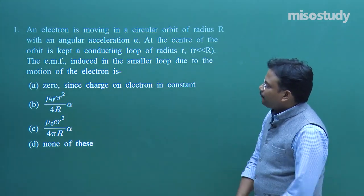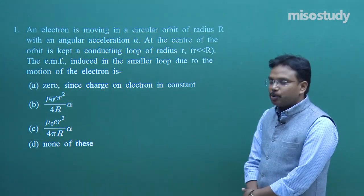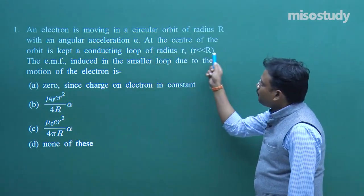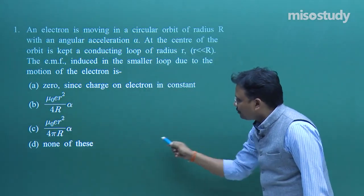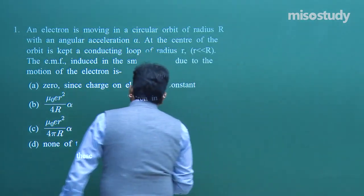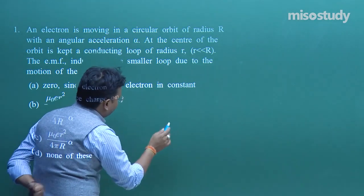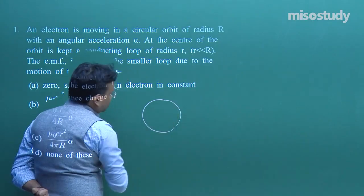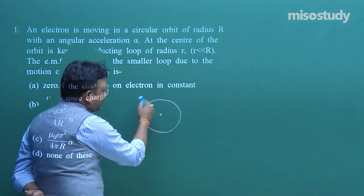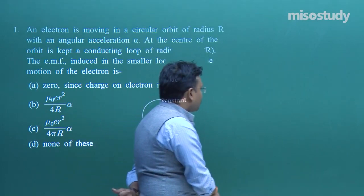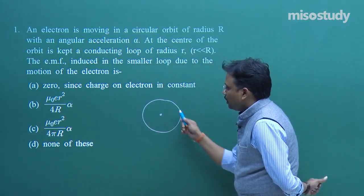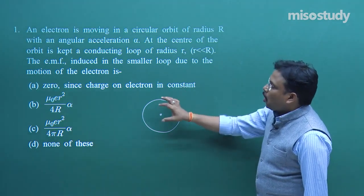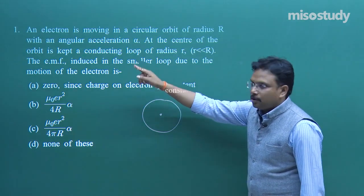The EMF induced in the smaller loop is due to the motion of the electron. Let me draw the diagram. The electron is revolving in the large orbit, and this circular shape is the smaller conducting loop placed at the center. The cause of induced EMF is obviously the circular motion of the electron, because the electron has charge — denoted by small e or q.